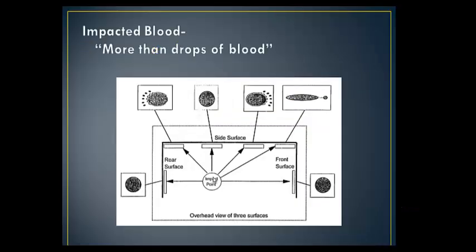So you can see here I have a point impact point, and this is an overhead view, so these are my three walls right here. And so all these different points — I've got one, two, three, four, five, six splatters — six different areas on three walls of splatters.